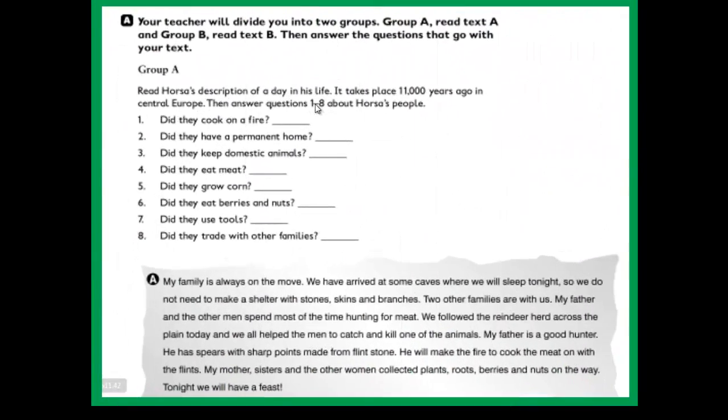Now let's move to the second book, I mean the workbook. In Exercise A we have: your teacher will divide you into two groups. Group A read text A and Group B read text B, and answer the questions that go with your text. Group A: Read Hart's description of a day in his life. It takes place 11,000 years ago in central Europe. Then answer questions one to eight about Hart's people. The questions are: